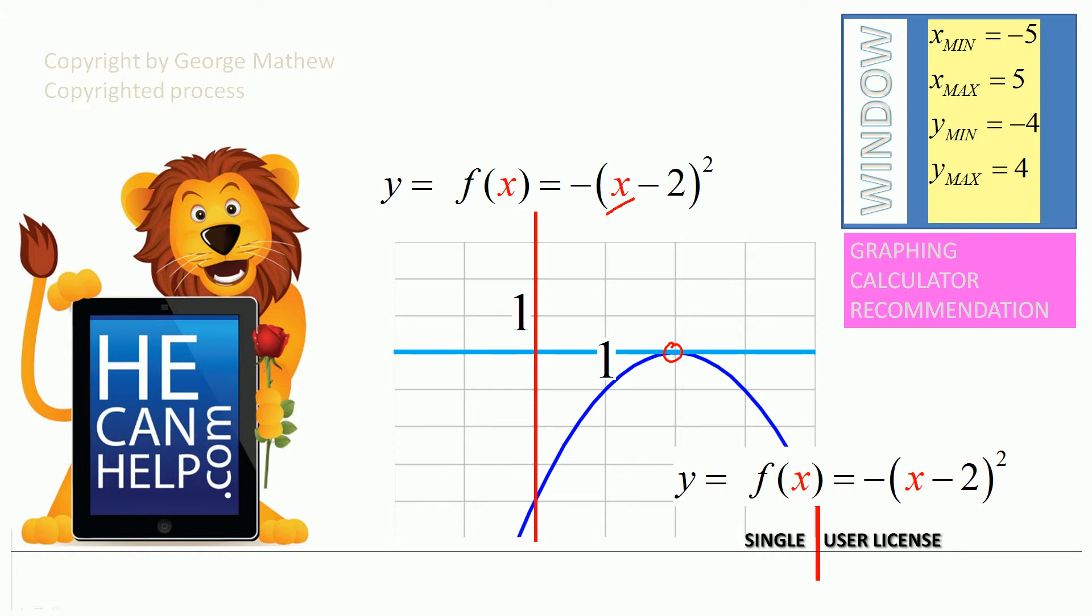When x equals 0, it will be 0 minus 2 the whole squared, so that will be positive 4. But we have a negative on the outside, so it will be negative 4. So everything goes well except that it is not symmetric about the y-axis.